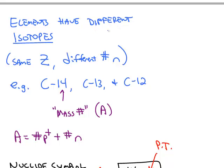Most elements are made up of different isotopes, which means they have the same atomic number Z, but they contain a different number of neutrons. So, for example, carbon exists in three isotopic forms: carbon-14, carbon-13, and carbon-12.